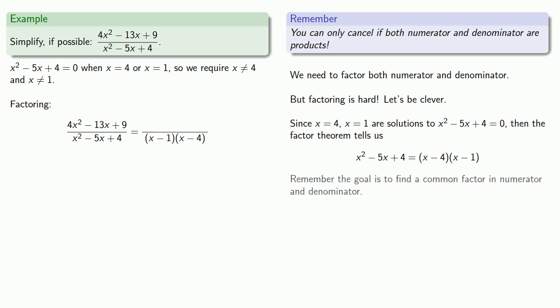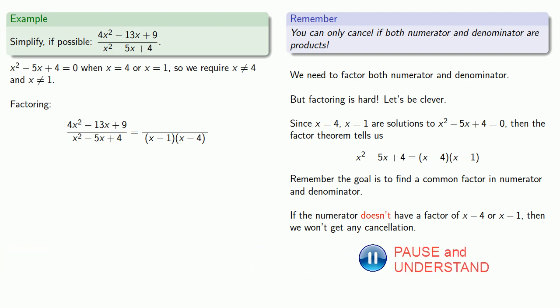Now remember, the goal is to find a common factor in the numerator and denominator. And what this means is that if the numerator doesn't have a factor of x minus 4 or x minus 1, then we won't get any cancellation. So in some sense, it's not worth factoring unless we know it has a factor of x minus 4 or x minus 1.